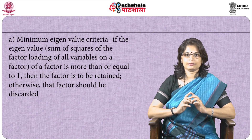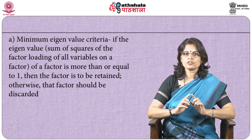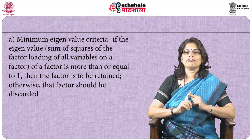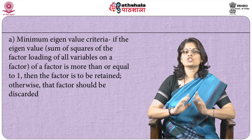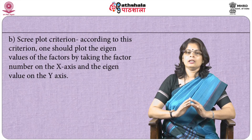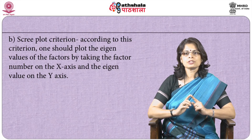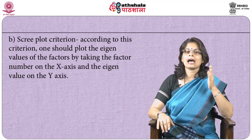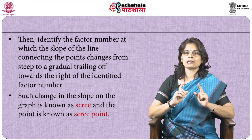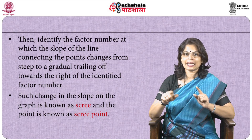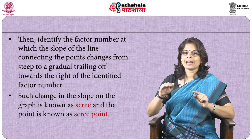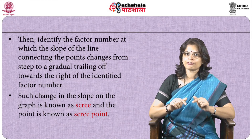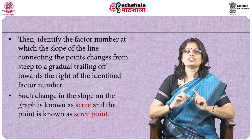The first criteria is minimum eigenvalue criteria. If the eigenvalue — that is the sum of squares of the factor loading of all variables on a factor — is more than or equal to 1, then the factor is to be retained, otherwise that factor should be discarded. The second criteria is the scree plot. According to this criteria, one should plot the eigenvalues of the factors by taking the factor number on the x-axis and the eigenvalue on the y-axis. Then identify a factor number at which the slope of the line connecting these points changes from steep to a gradual trailing off towards the right. Such a change in the slope on the graph is known as the scree and the point is known as the scree point.